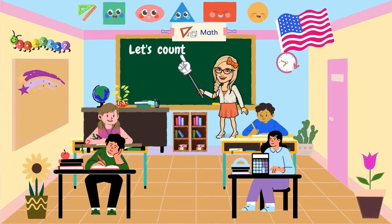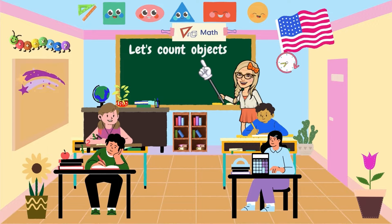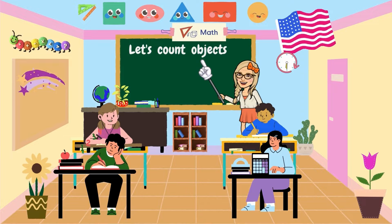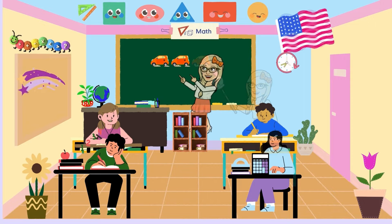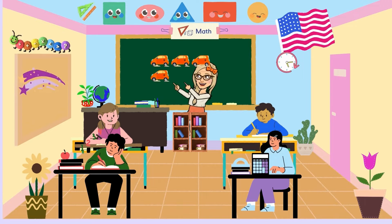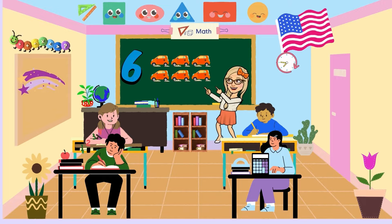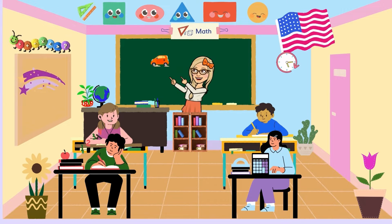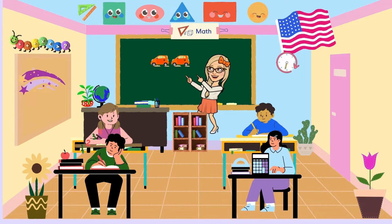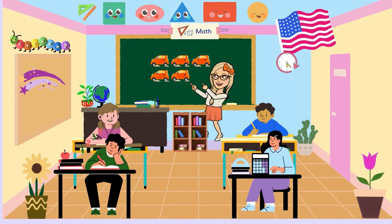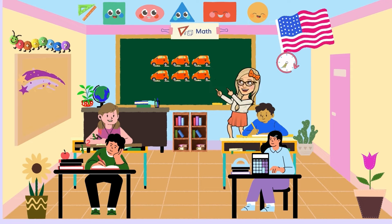Now we're going to count objects. Today we're going to count toy cars. There we go: one, two, three, four, five, six. One, two, three, four, five, six, seven.